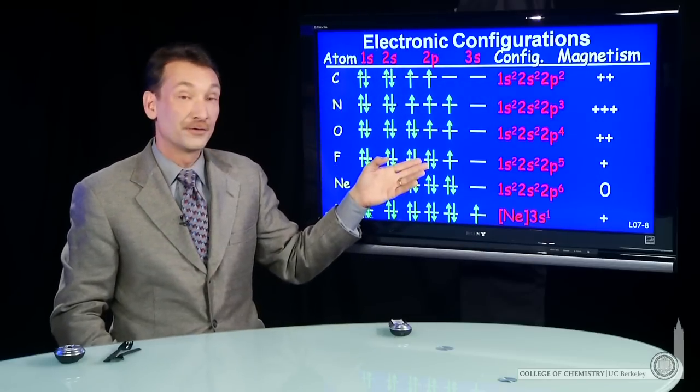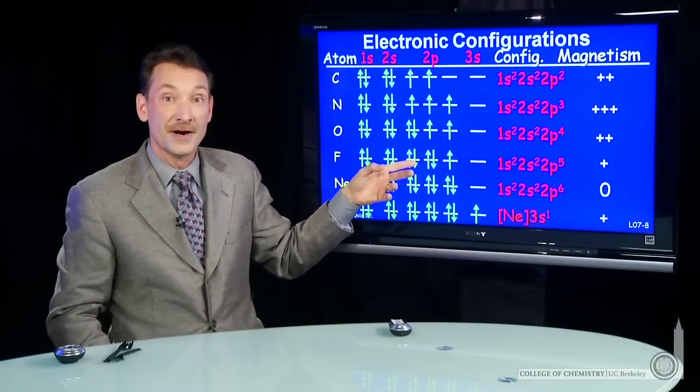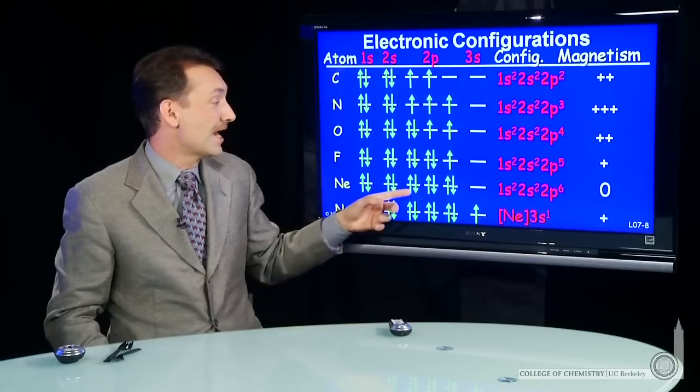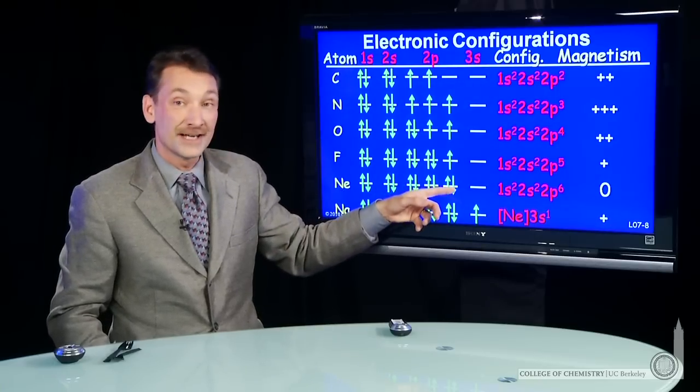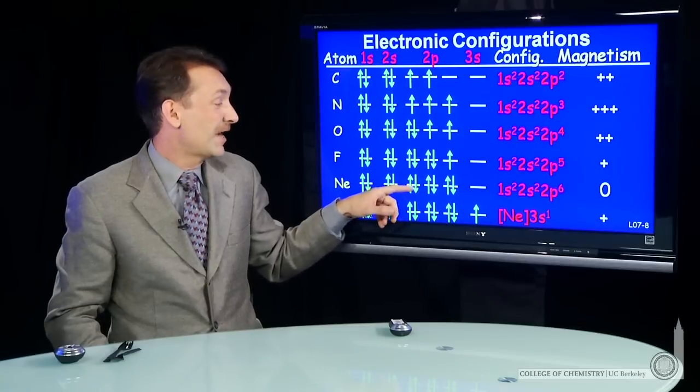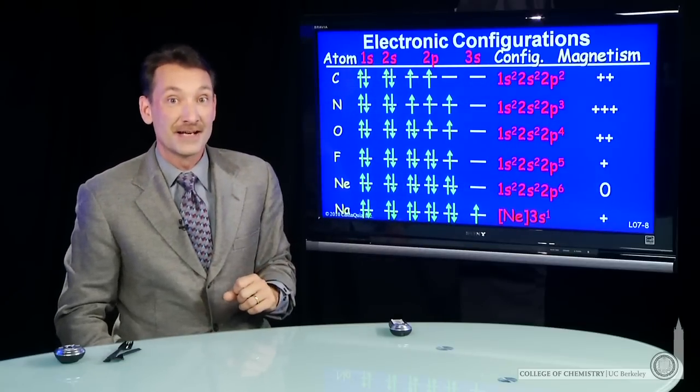We can continue with fluorine and neon, and we see that the electrons start to pair in the 2s and 2p orbitals. So neon now has 2p6. All the electrons are paired in the p shell. Neon is not magnetic.